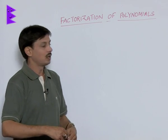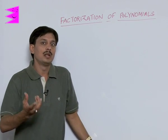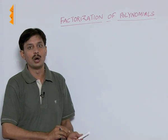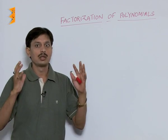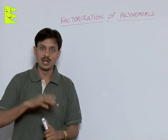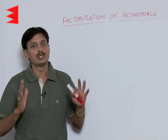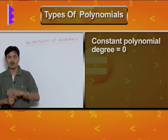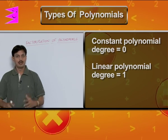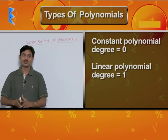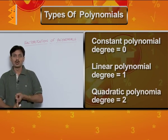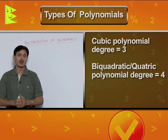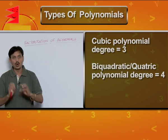If the degree of a polynomial is 0, we call it a constant polynomial — meaning there is no variable. If the degree is 1, it is known as a linear polynomial. If the degree is 2, it is known as a quadratic polynomial. If the degree is 3, it is known as a cubic polynomial. If the degree is 4, it is known as a biquadratic polynomial or quartic polynomial.